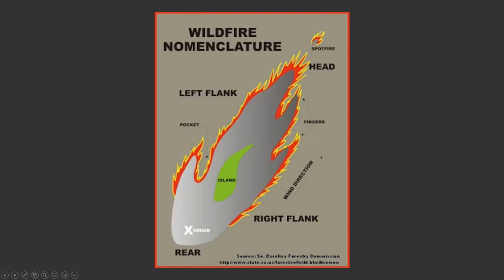Fingers are kind of the leading edges of fire — little peninsulas almost where it's not flush. The head of the fire is kind of its broadest point, its farthest out point, kind of the tip of the main body of the fire. A spot fire is little fires starting out away from the main body of the fire because of ash or embers or that kind of stuff.